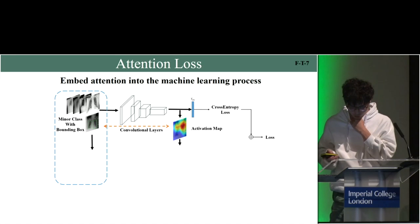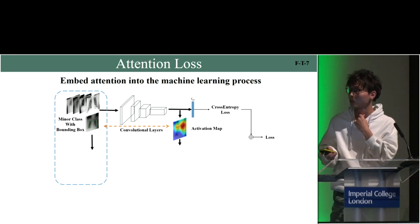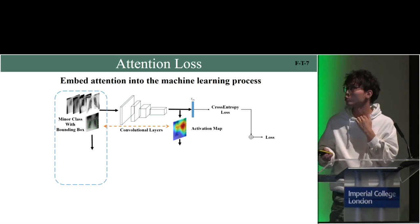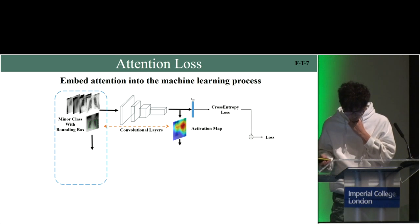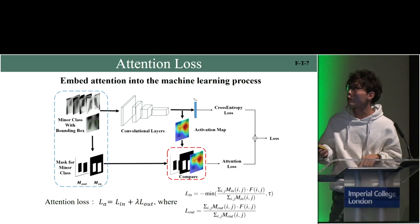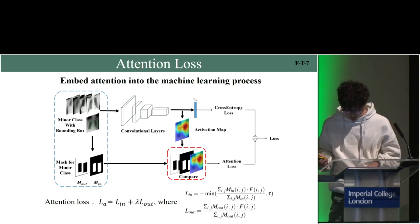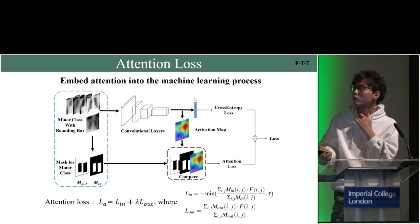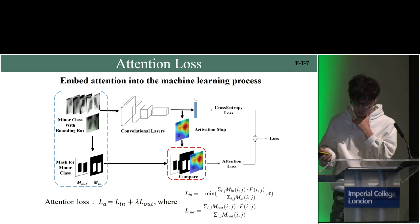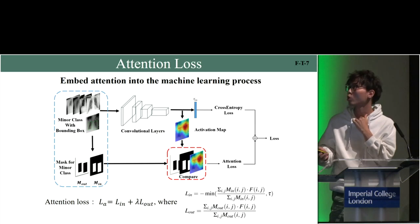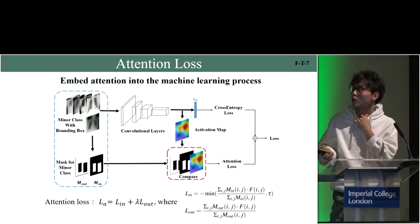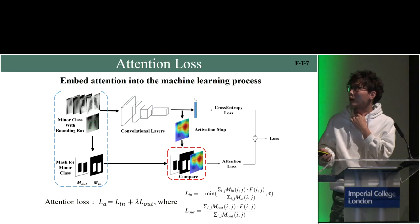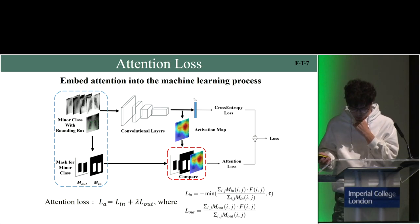There are two loss functions used to train our network. One is the general cross-entropy loss for the classifier, and the other is the attention loss.